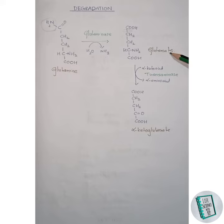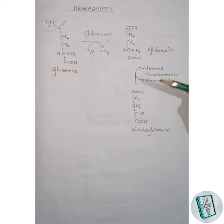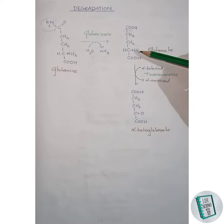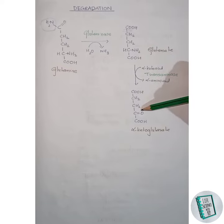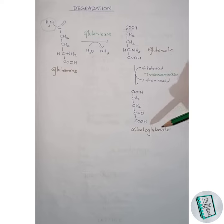This glutamate then gets transaminated by the transaminase enzyme to form alpha-ketoglutarate. Here this amino group gets replaced by a keto group and alpha-ketoglutarate is formed. This is all about the degradation of glutamine.